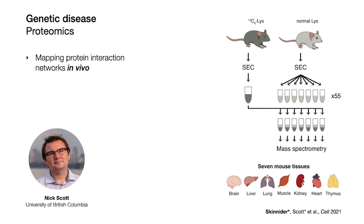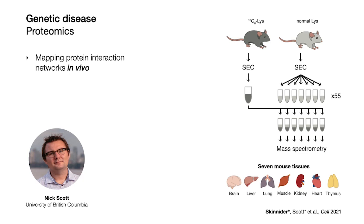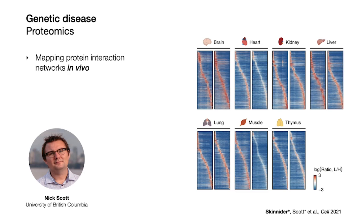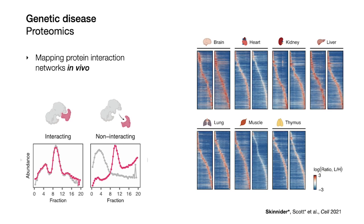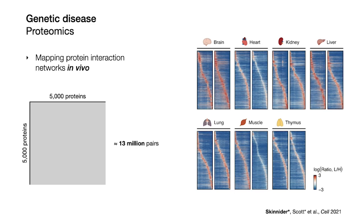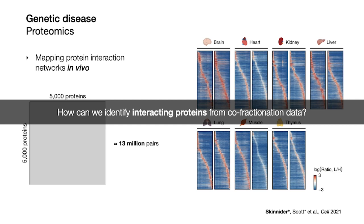The actual co-fractionation experiments were done by Nick Scott, a postdoc in Leonard's lab, in what was a pretty heroic experimental effort. The computational challenge in this data is picking out the tiny minority of interacting protein pairs in these huge proteomic datasets. We had measured upwards of 5,000 proteins in each tissue, and that meant for each tissue we had to decide whether or not 13 million different pairs of proteins were interacting. So to actually learn anything about biology from this dataset, I first had to figure out how to identify interacting proteins in co-fractionation data.